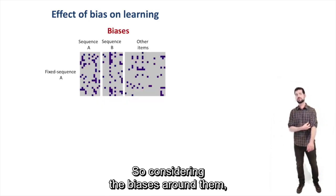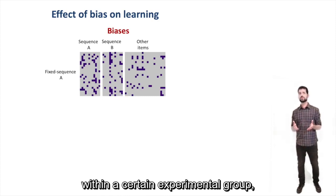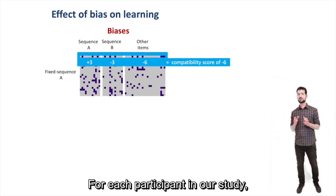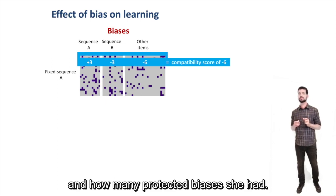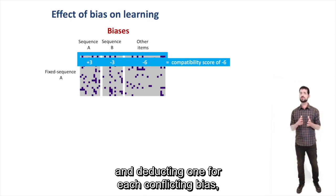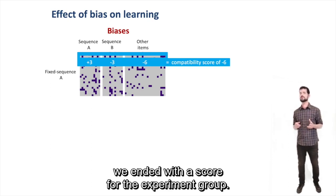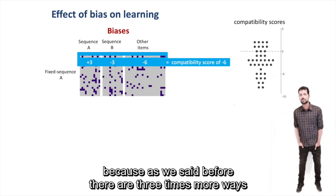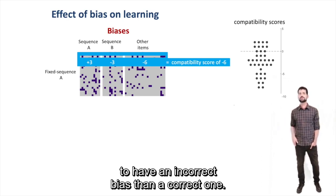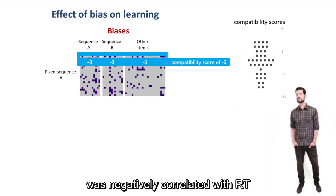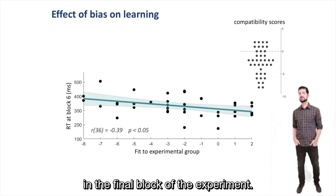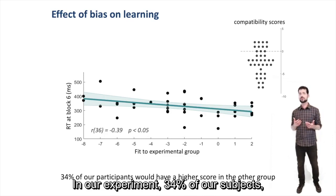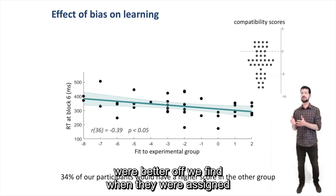So considering the biases are random, and so is the allocation of a participant to a certain experimental group, we thought it would be interesting to examine how these two interacted to affect our results. For each participant in our study, we counted how many matching biases and how many conflicting biases she had, giving them points for each matching bias and deducting one for each conflicting bias yielded a score of compatibility to the experiment group. Most scores were indeed negative because there are three times more ways to have an incorrect bias than a correct one. We found that this compatibility score was negatively correlated with RT in the final block of the experiment. The better you happen to fit the sequence assigned to you, the better you perform at the end of the experiment. In our experiment, 34 percent of our subjects would be better off if randomly assigned to the other sequence.